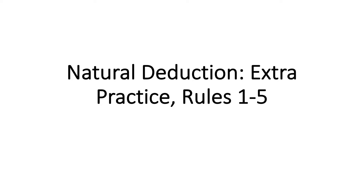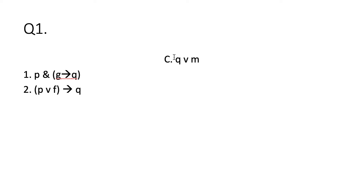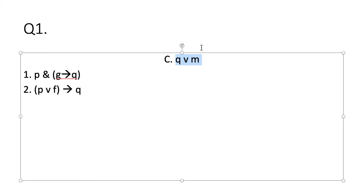In this video I'm going to go through each of the five extra practice questions. We're doing natural deduction and we're going to be using just the rules one through five. Here is the first question. My conclusion I'm going to put it over here just so I don't confuse it with one of my premises. I'm asked to show that if both of these premises are true then necessarily this disjunction Q or M is true too.